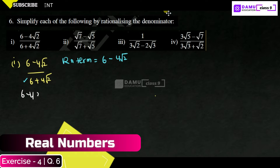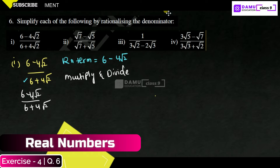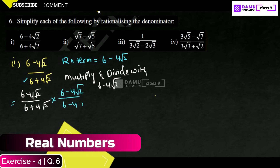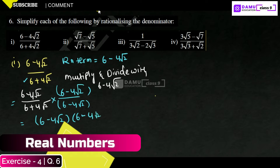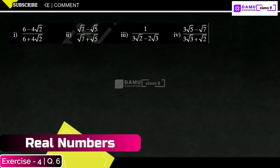So we have (6 minus 4 root 2) divided by (6 plus 4 root 2), multiplied by (6 minus 4 root 2) over (6 minus 4 root 2). That gives us (6 minus 4 root 2) times (6 minus 4 root 2) in the numerator, divided by (6 plus 4 root 2) times (6 minus 4 root 2) in the denominator. The numerator is in the format of (a minus b) whole square, and the denominator is in the format of (a plus b)(a minus b).